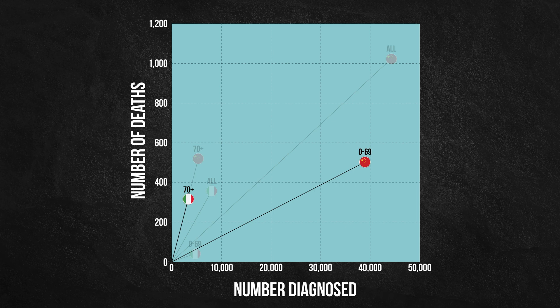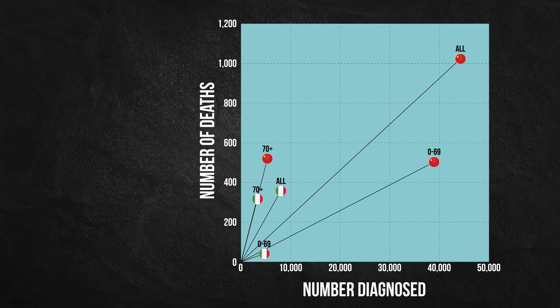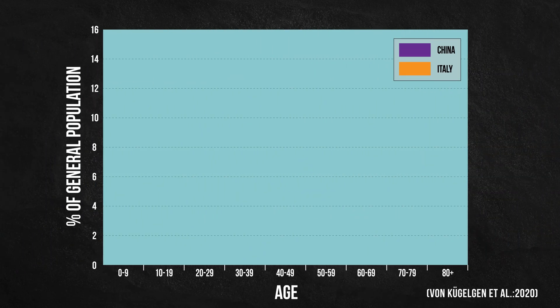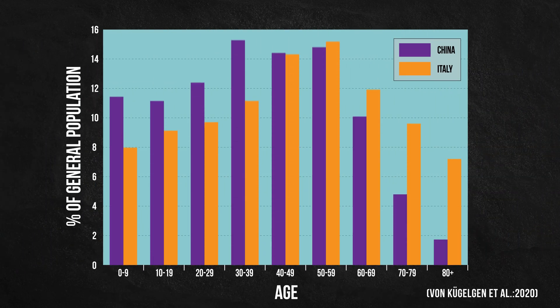What we were missing when looking only at case fatality rates is that the age groups in China and Italy have different sizes, in part because China and Italy have very different demographics. Italy has a much older population, so you would expect it to have a larger share of confirmed cases among the elderly. Having a larger group size for the groups at highest risk resulted in the trend reversing when the separated datasets were aggregated.